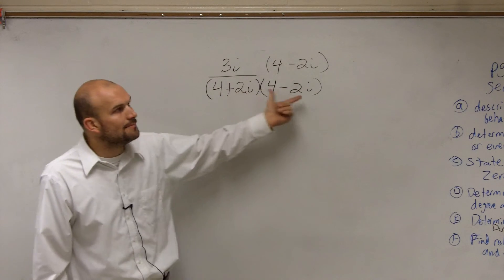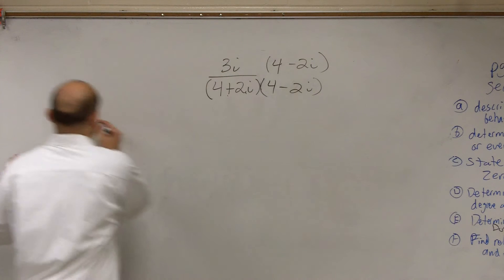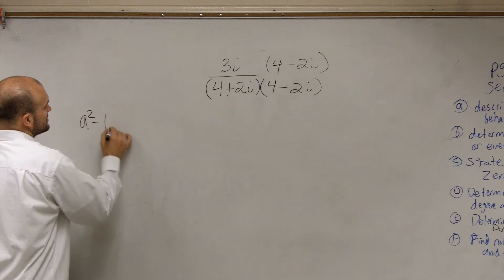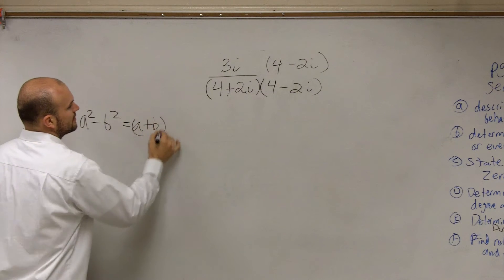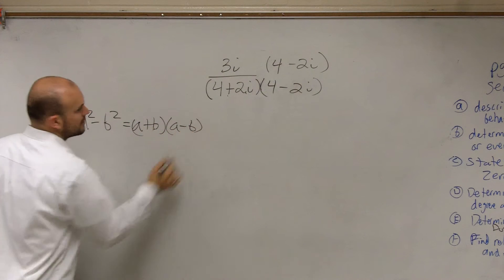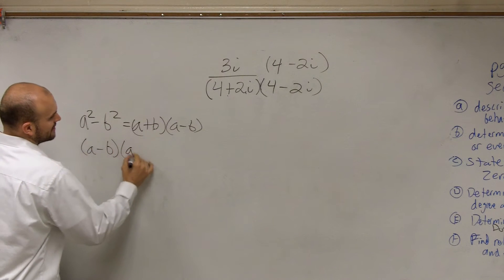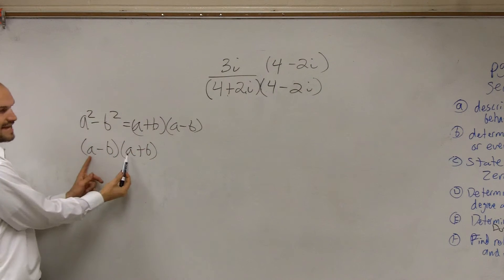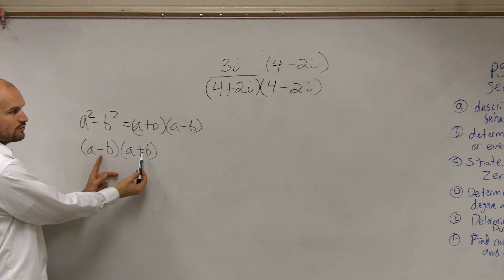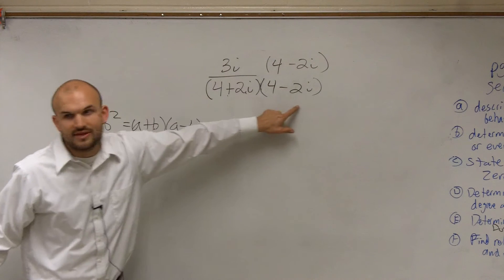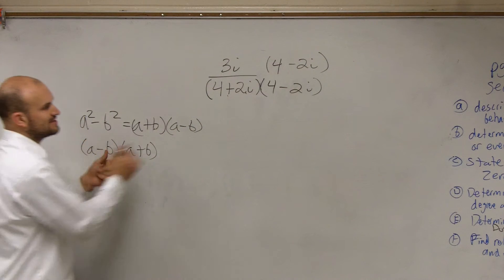If you guys remember when we were practicing factoring — if it's a difference of two squares, a squared minus b squared — the factored form was a plus b times a minus b. So what I'm really doing is multiplying an expression with the same two terms, one subtracted and one positive. So all I need to do is say, oh, this is a squared minus b squared.